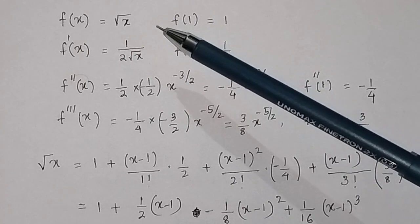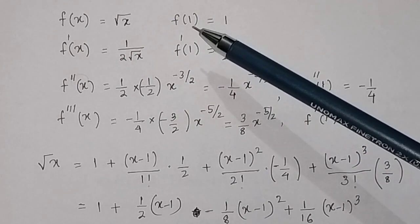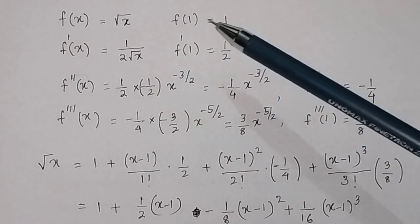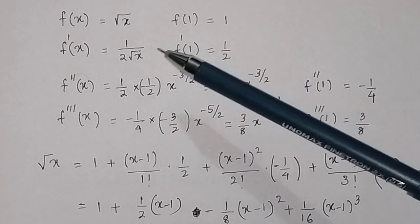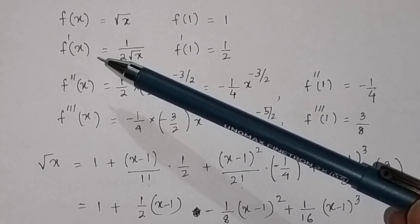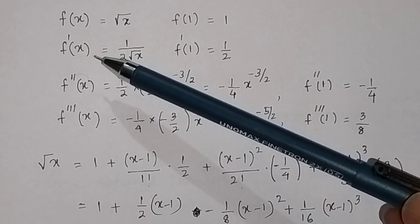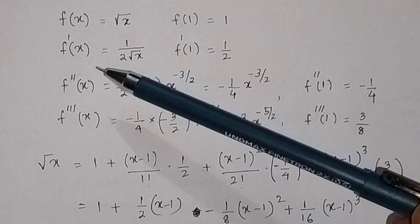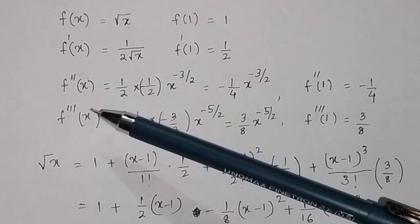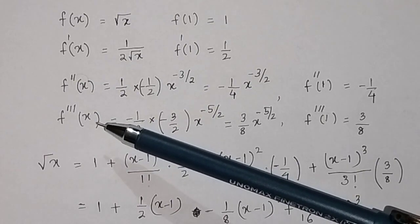The function is f(x) = √x. The value of the function at x = 1 is f(1) = 1, because √1 = 1. Similarly, we will find the first derivative, second derivative, and third derivative each evaluated at x = 1.